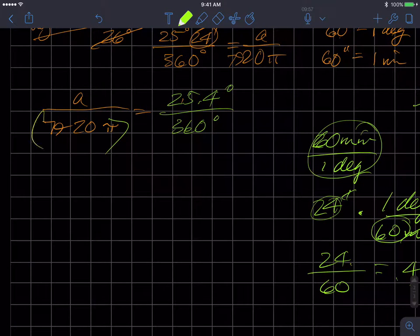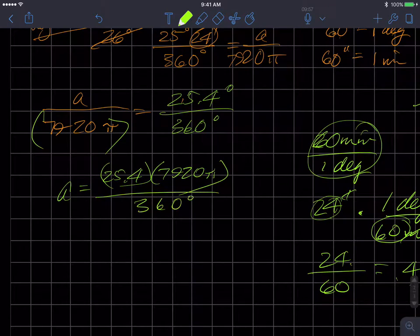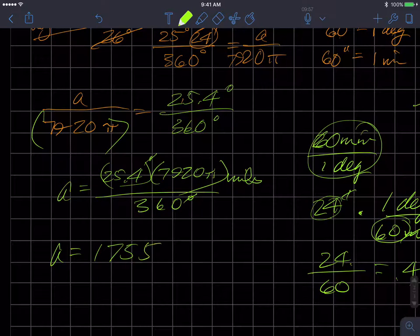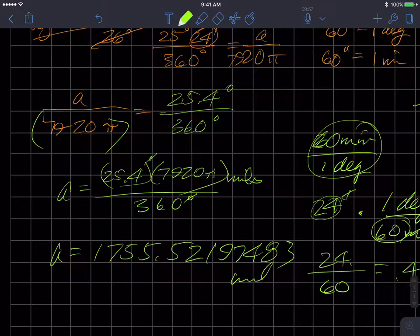So now, multiply both sides by this value, and I'll get A equals 25.4 times 7920 pi divided by 360. This is degrees, degrees, and this is miles. So 24 divided by 60 plus 25, and that's going to be multiplied by 7920 times pi, and then divide it by 360. And we get the arc length from city B to city A is 1755.52 miles. They said round to the nearest mile, so we get A is equal to 1756 miles.